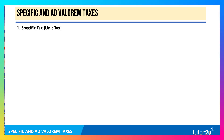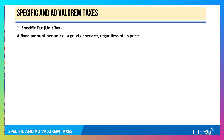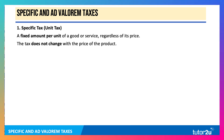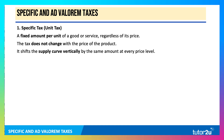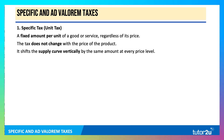A specific or unit tax is basically a fixed tax per unit, regardless of price. The tax does not change with the price of the product. What it does is shift the supply curve vertically by the same amount at every price level. It's a tax on the producer.